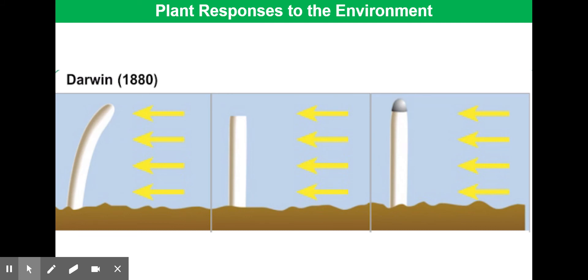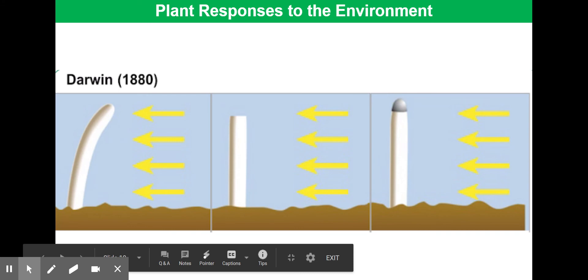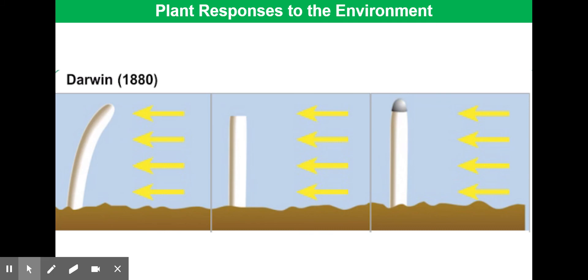Darwin observed the coleoptile bending towards light. He then cut off the tip of the coleoptile and found that it no longer bent towards the light. In a third experiment, he placed a small cover on the tip of the coleoptile and again observed no bending towards light. Based on these experiments, Darwin concluded that a growth stimulus is produced in the tip of the coleoptile, is transmitted down to a zone just below it called the zone of cell elongation, and that cells on the shaded side elongate more than those on the other side.